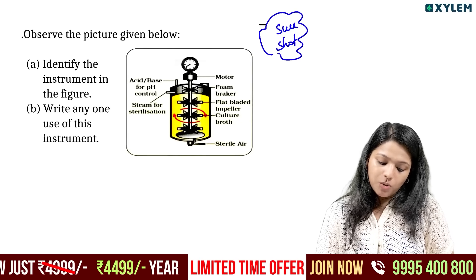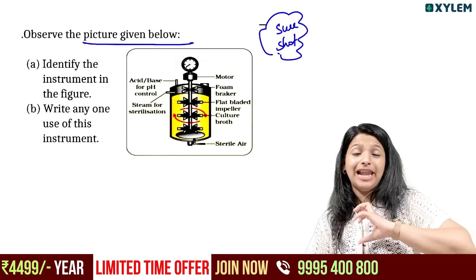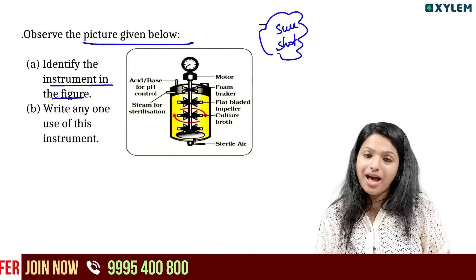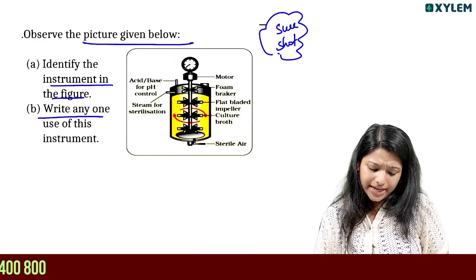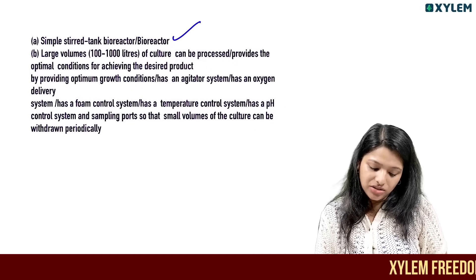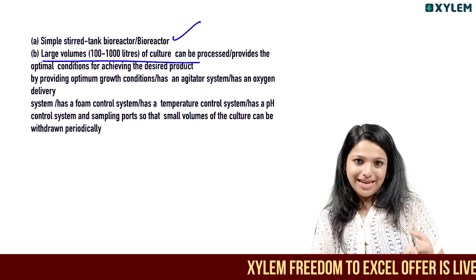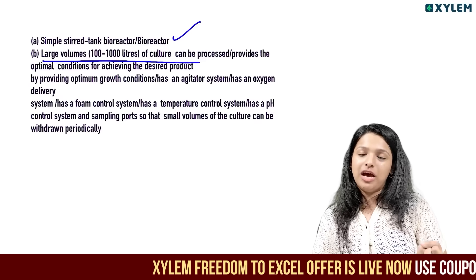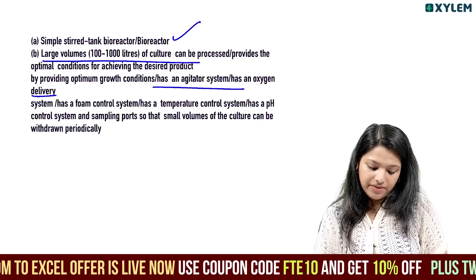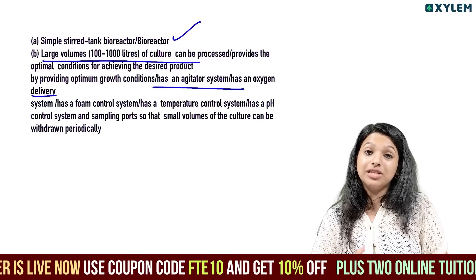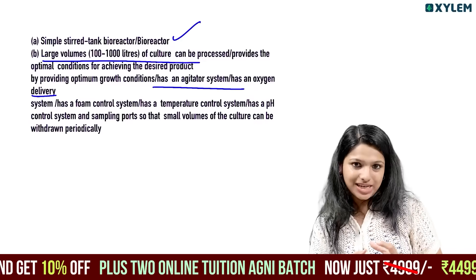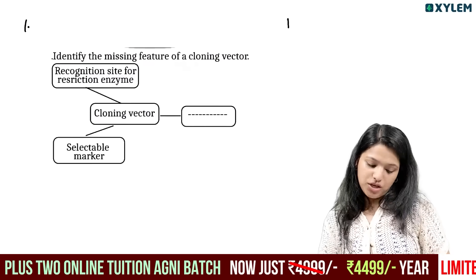Observe the picture given below. Identify the instrument in the figure — it is a bioreactor. Write any one use of this instrument. A stirred-tank bioreactor is used for processing large volumes of culture. It has an agitator system and an oxygen delivery system, and allows large-scale production.